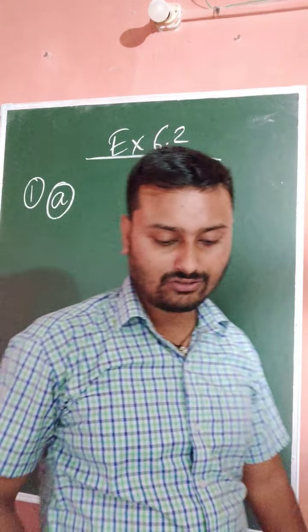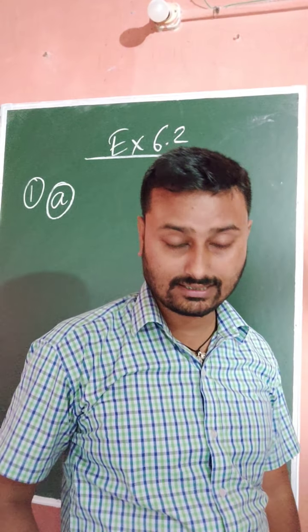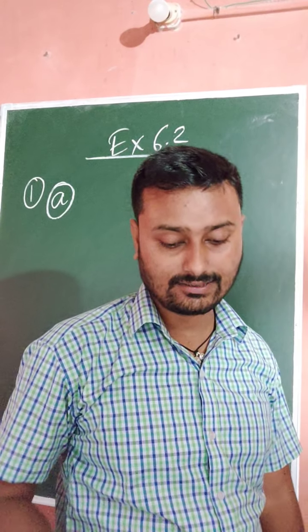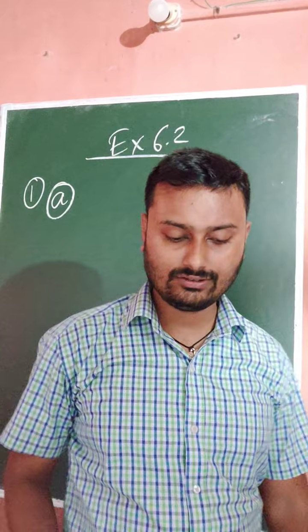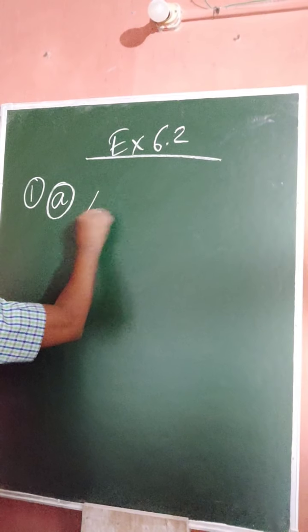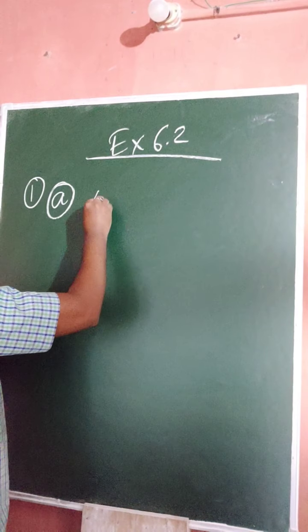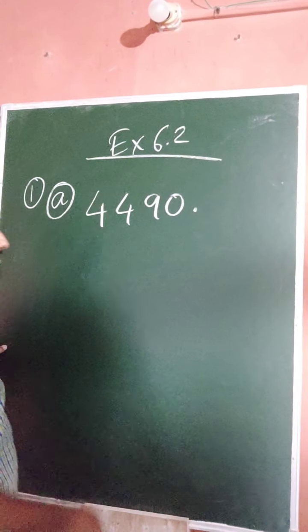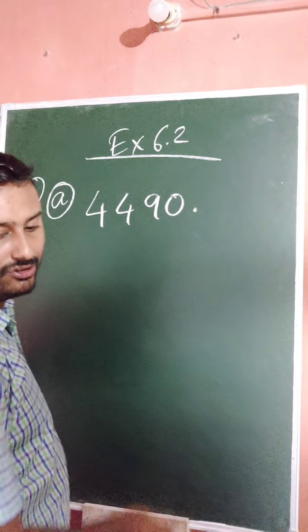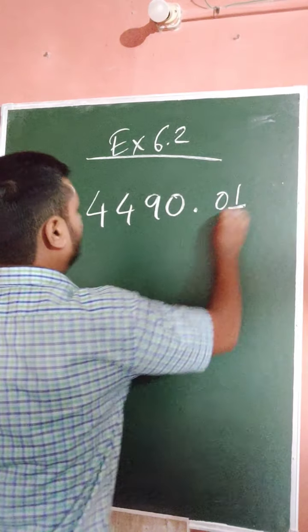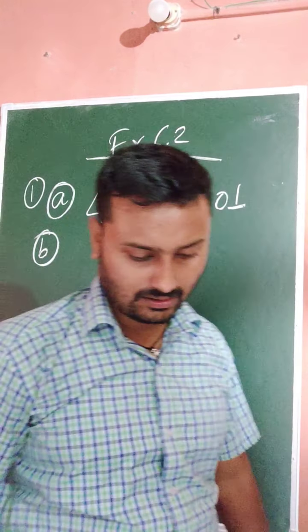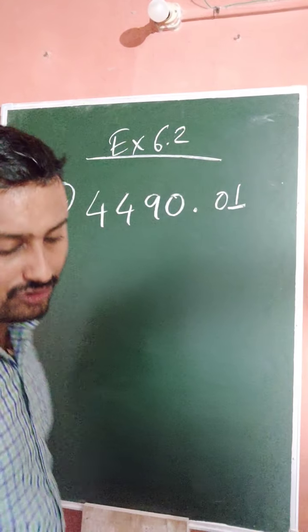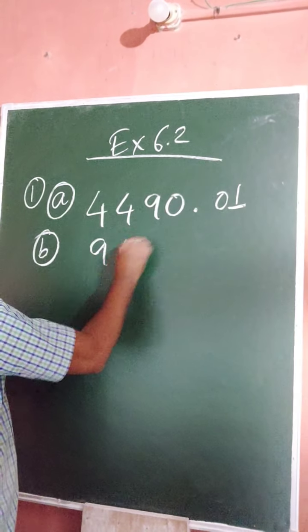For part (a): thousands column is 4, hundreds is 4, tens is 9, ones is 0, then decimal point, then 0 and 1. So the number is 4490.01. For part (b): 9900.13.